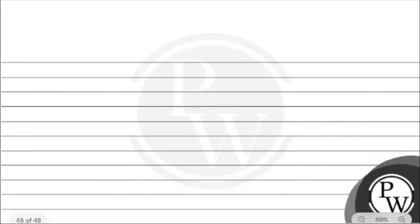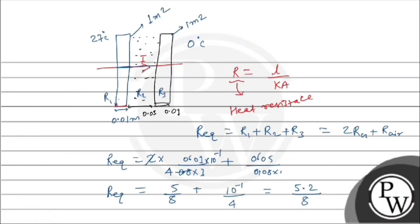Now the rate of flow, that is current I, equals Δθ upon R equivalent. Delta theta is 27 minus 0, so we get 27 upon 5.2 times 8. Solving this gives I equals 41.538 joules per second.